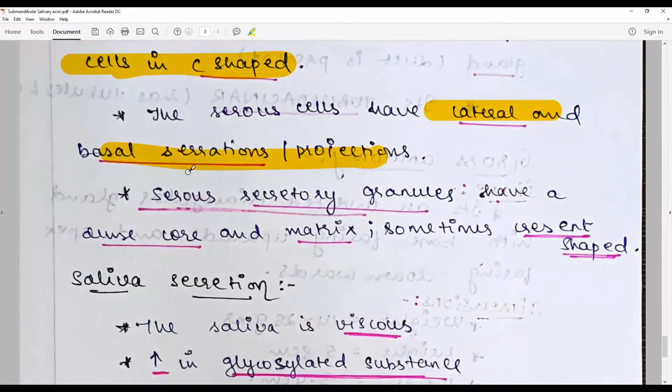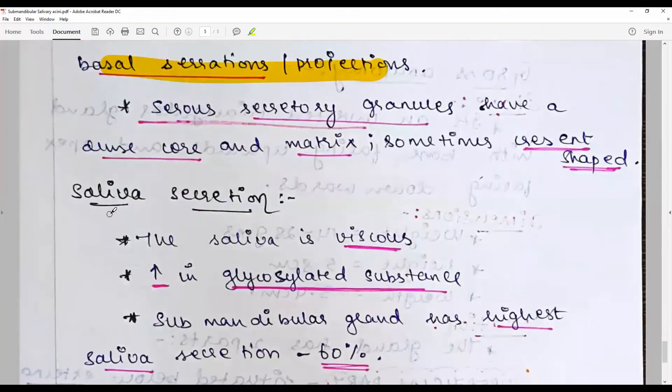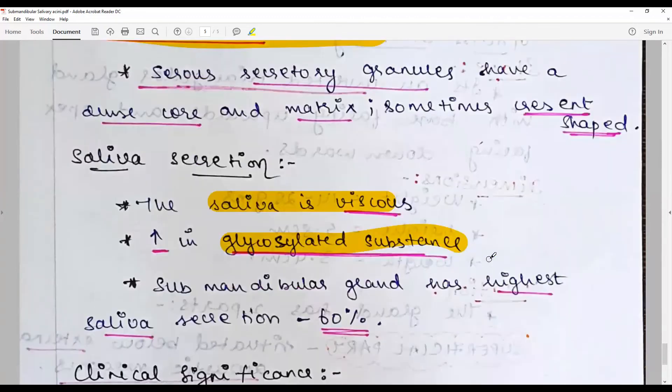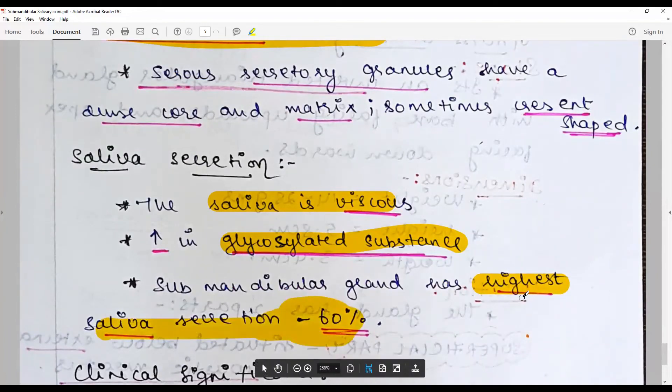The saliva secretion of submandibular is viscous with increase in glycosylated substance and highest saliva secretion - about 60 percent of all secretions are produced by submandibular gland.